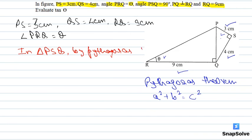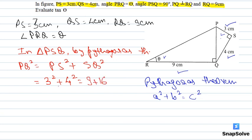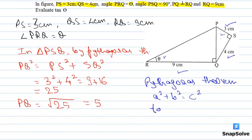Applying the Pythagorean theorem in triangle PSQ: PQ² = PS² + SQ² = 3² + 4² = 9 + 16 = 25. Hence, the length of PQ = √25 = 5 centimeters.